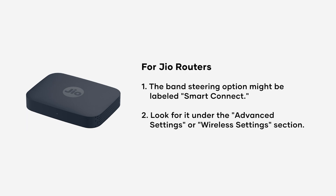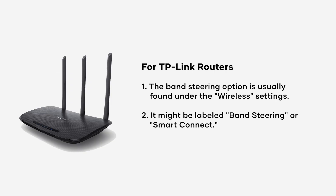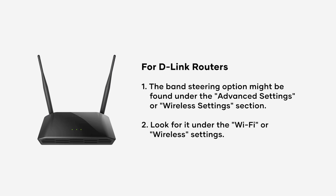For Geo routers, band steering is usually labeled as Smart Connect under Advanced or Wireless settings. For TP-Link routers, band steering is typically found under Wireless settings labeled as Band Steering or Smart Connect. For D-Link routers, find the band steering option under Advanced or Wireless settings.